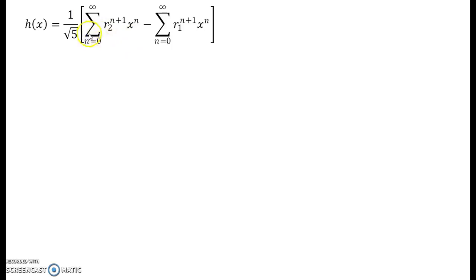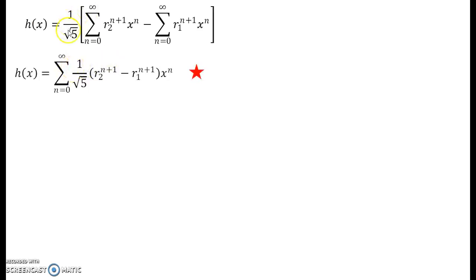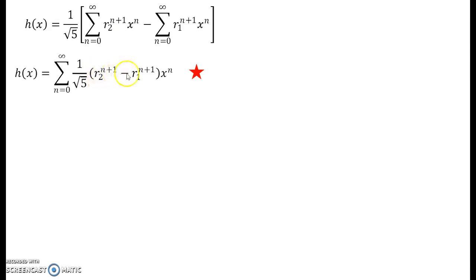Since x to the power n is the same and the summation limits are also the same, we can take the summation common and push 1/root 5 inside. This gives h(x) as the sum of (1/root 5) times (r2 to the power n plus 1 minus r1 to the power n plus 1) times x to the power n, where the coefficient of x to the power n is (1/root 5) times (r2^{n+1} minus r1^{n+1}).